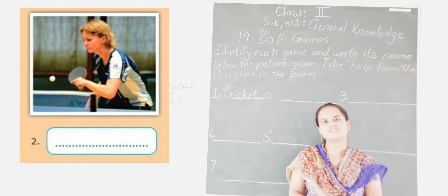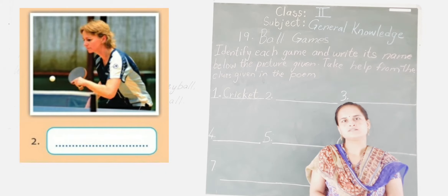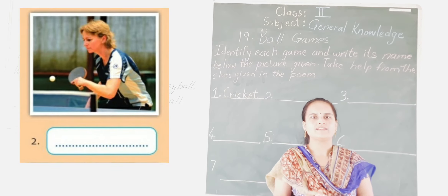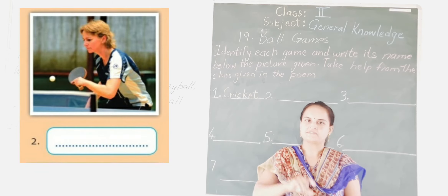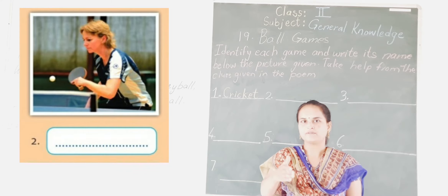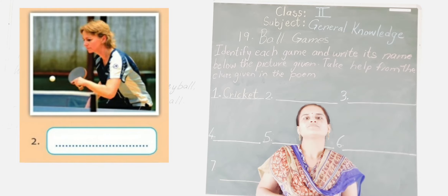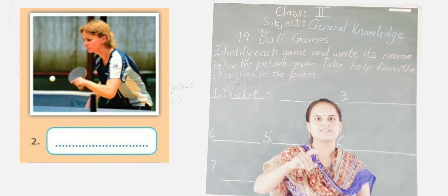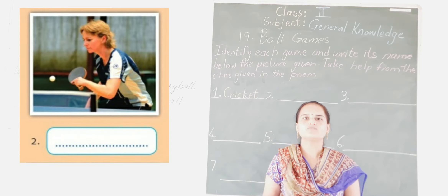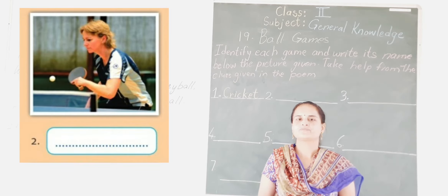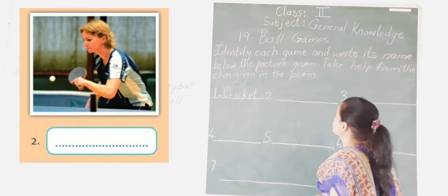The second one — which game is that, children? Can you guess it? Yes, it is table tennis. In this game there is a racket, and the bat is called a racket. It is small in size, and the ball is also small. It is played on a table which has a net in between. It can be played between 2 players or as singles. So the second game is table tennis.